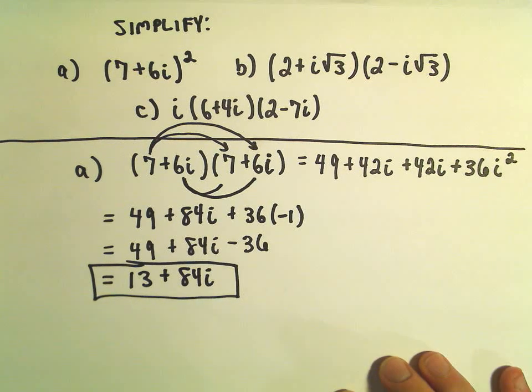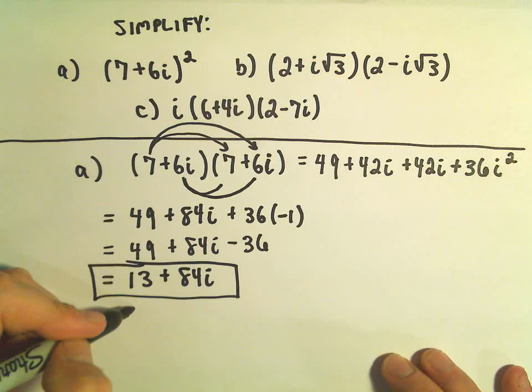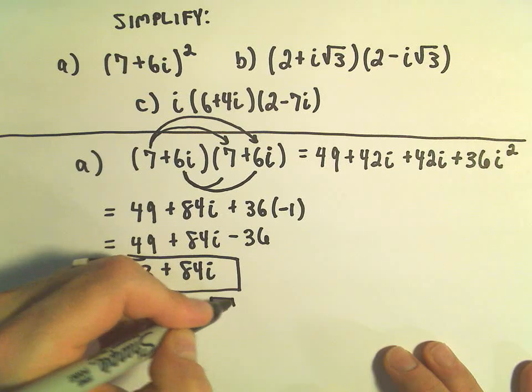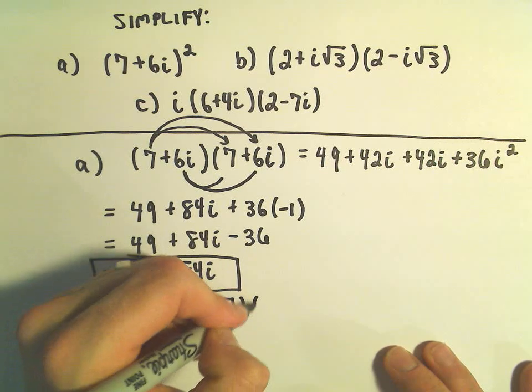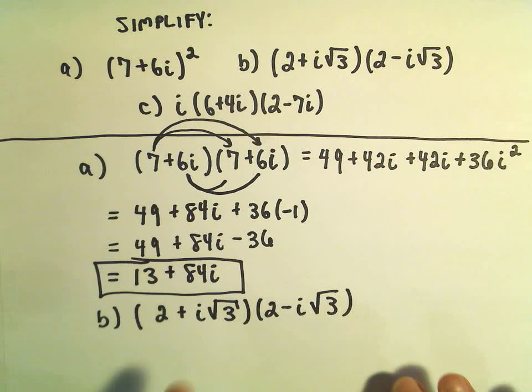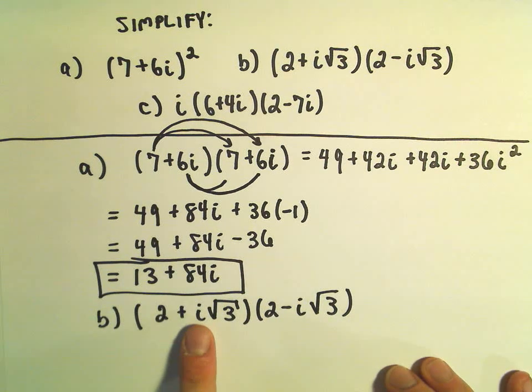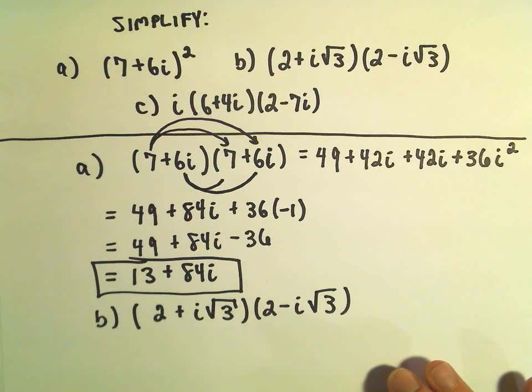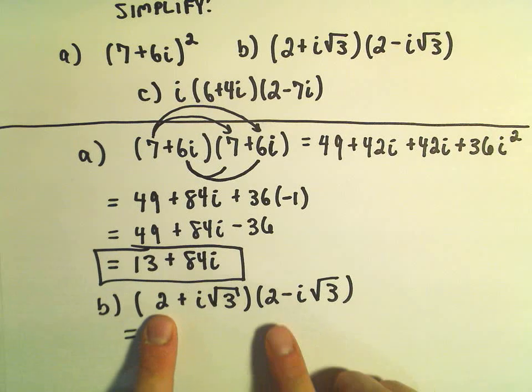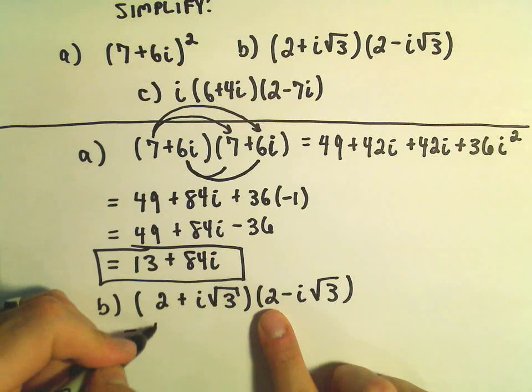Part B will be the exact same way. A little more tricky just because we have some radicals in there. So we've got 2 plus i times square root of 3 and 2 minus i times square root of 3. Typically we write the numbers and then the i. But sometimes people will write the i first, especially if you have a radical. Just because sometimes people might accidentally put the i underneath the square root. And this way it avoids any ambiguity. So, alright, so I'm going to take 2 times 2. That's going to give us positive 4.